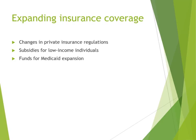Expanding insurance coverage includes changes in private insurance regulations and subsidies for low-income individuals and funds for Medicaid expansion. Changes in private insurance regulations mean insurers must cover people — they cannot deny coverage based on a preexisting condition or drop patients at a certain age. Subsidies help individuals whose jobs do not offer insurance access affordable health insurance, particularly those who earn too much to qualify for free government-provided coverage.